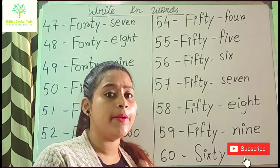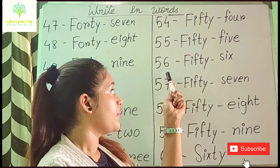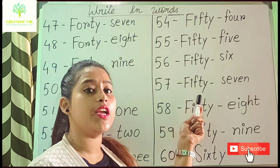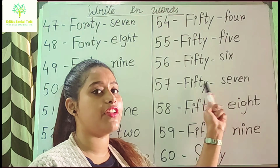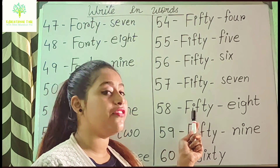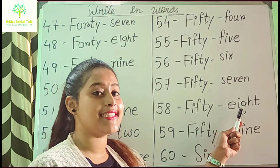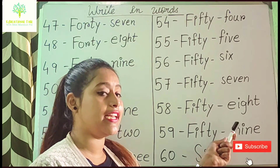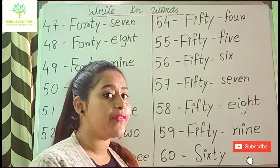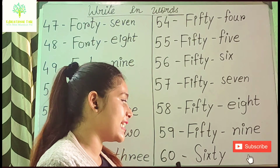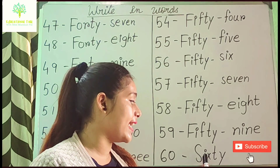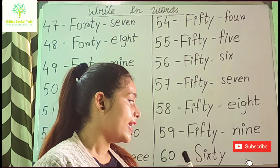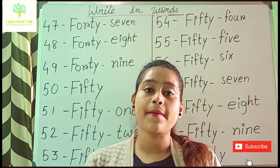For 55, F-I-F-T-Y then 5 is F-I-V-E. Remember the first letter will be capital. For 56, F-I-F-T-Y then 6 is S-I-X. For 57, F-I-F-T-Y then 7 is S-E-V-E-N. For 58, F-I-F-T-Y then 8 is E-I-G-H-T. For 59, F-I-F-T-Y then 9 is N-I-N-E. For 60, first write 6 spelling S-I-X, then T-Y, so 60 is S-I-X-T-Y.